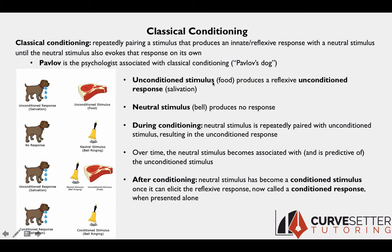There are a number of terms to know for the MCAT. The unconditioned stimulus naturally produces some reflexive response — for example, a shock naturally causes pain, or a loud sound naturally causes a startle response. The reflexive response it causes is called the unconditioned response. These are unconditioned, meaning they don't have to be learned — they're natural and reflexive. In Pavlov's dog, the unconditioned stimulus is food (a steak), which naturally produces the unconditioned response of salivation. A neutral stimulus is one that doesn't produce a reflexive response — ringing a bell doesn't naturally produce any response.